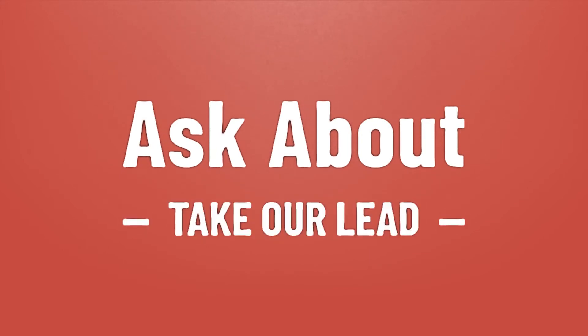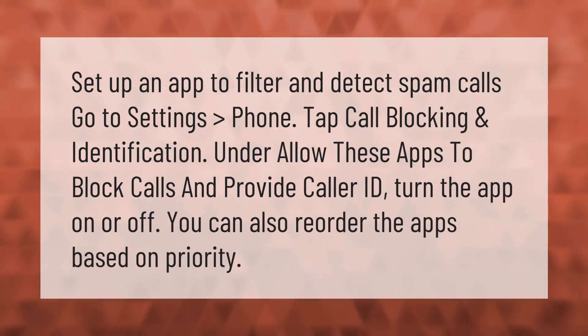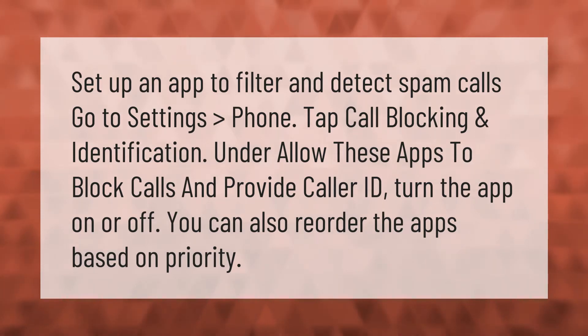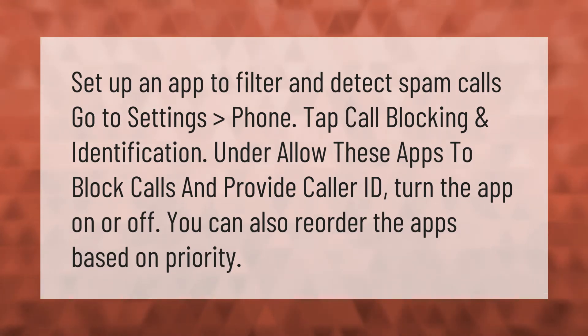Set up an app to filter and detect spam calls. Go to Settings, then Phone, tap Call Blocking and Identification. Under 'Allow these apps to block calls and provide caller ID', turn the app on or off. You can also reorder the apps based on priority.